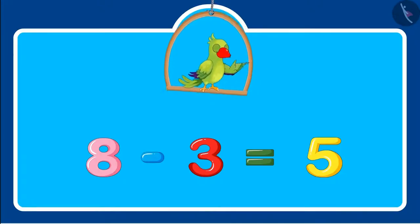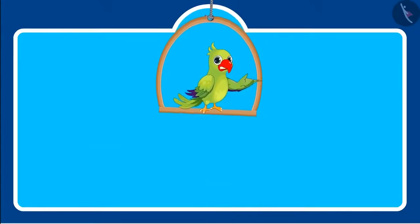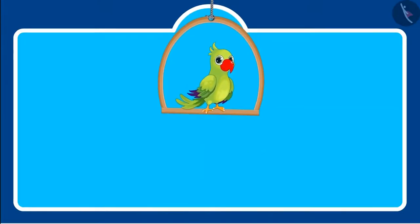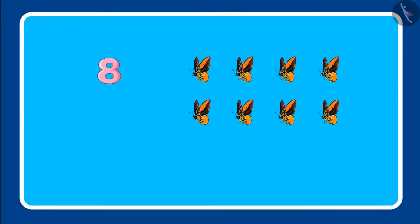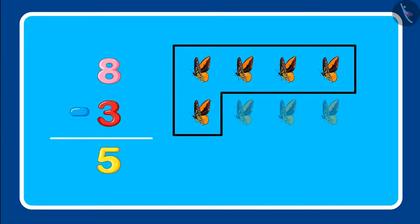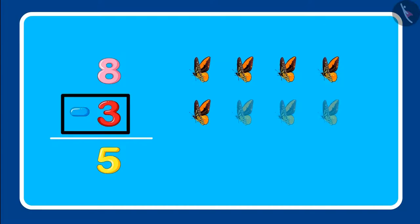Friends, do you know that we can write this in another way also? We can write it like this: first, there were a total of eight butterflies, so we write the total number on top. Then, three butterflies flew away, so below the total number we put the subtraction sign and write the number that got reduced. Then we write the remaining number, which is five butterflies.